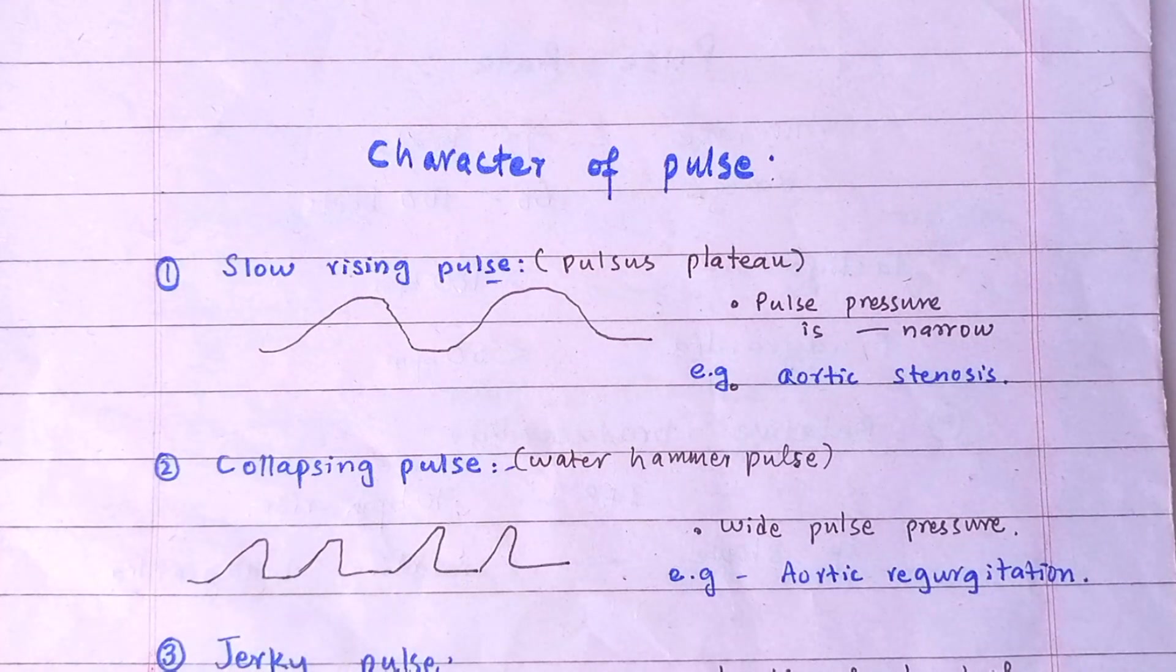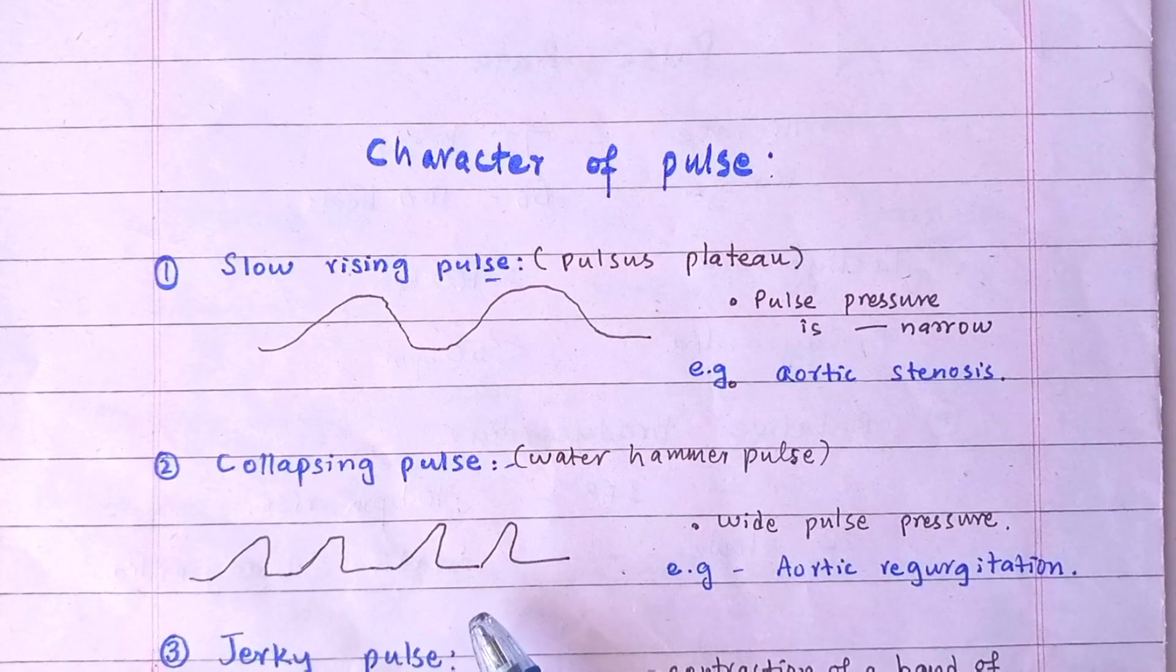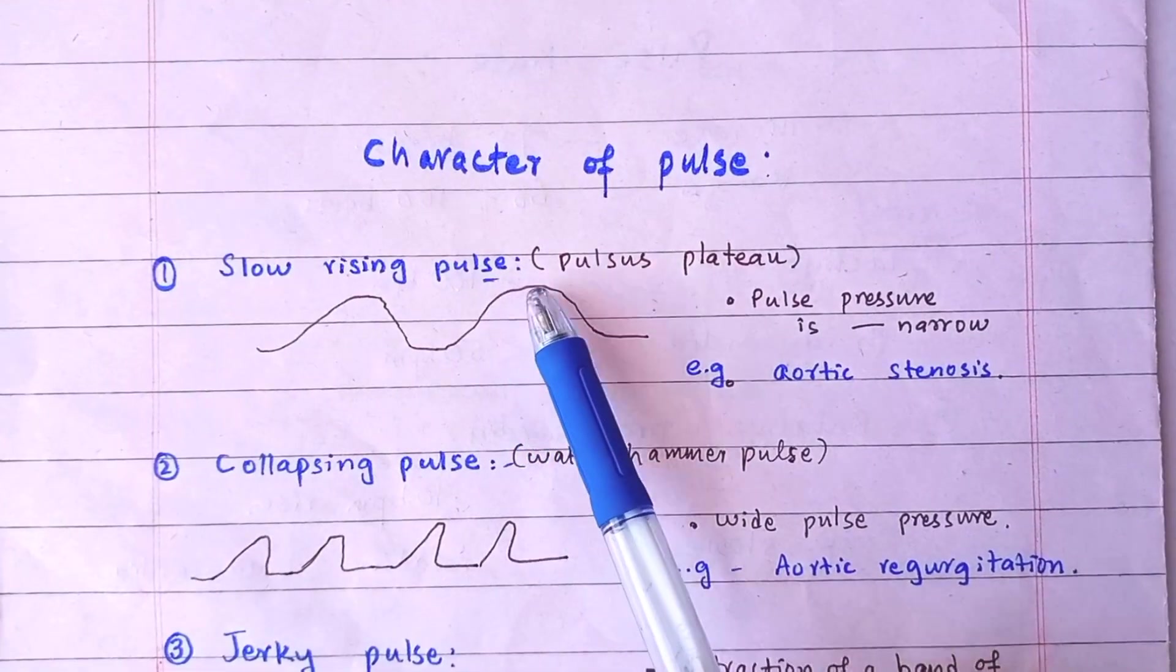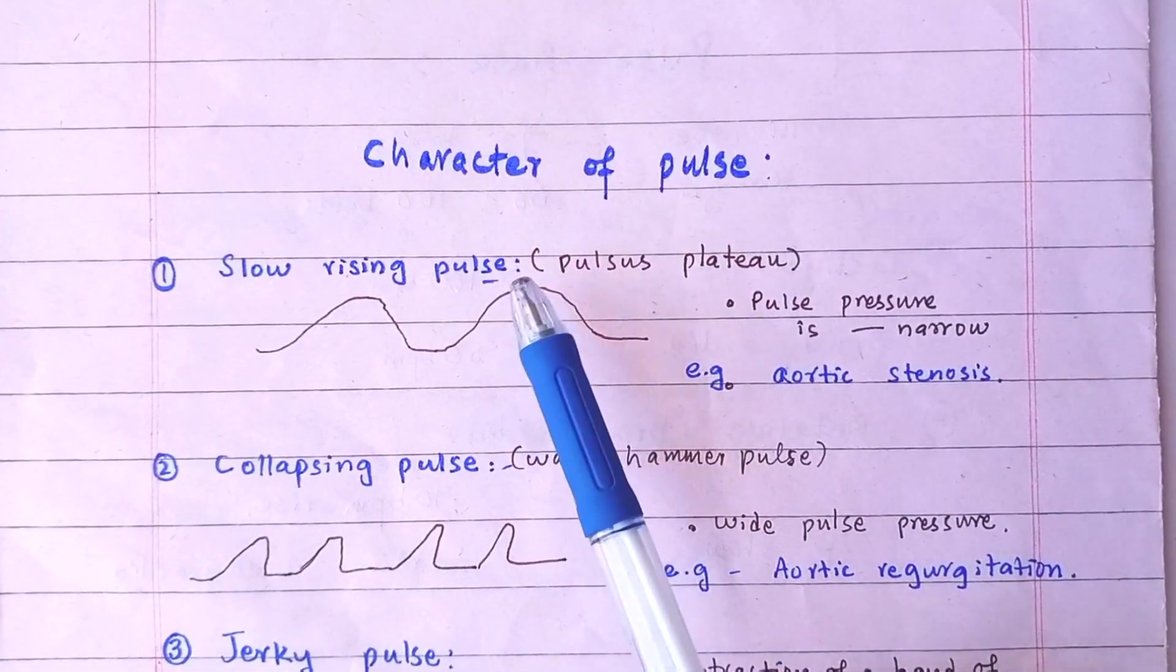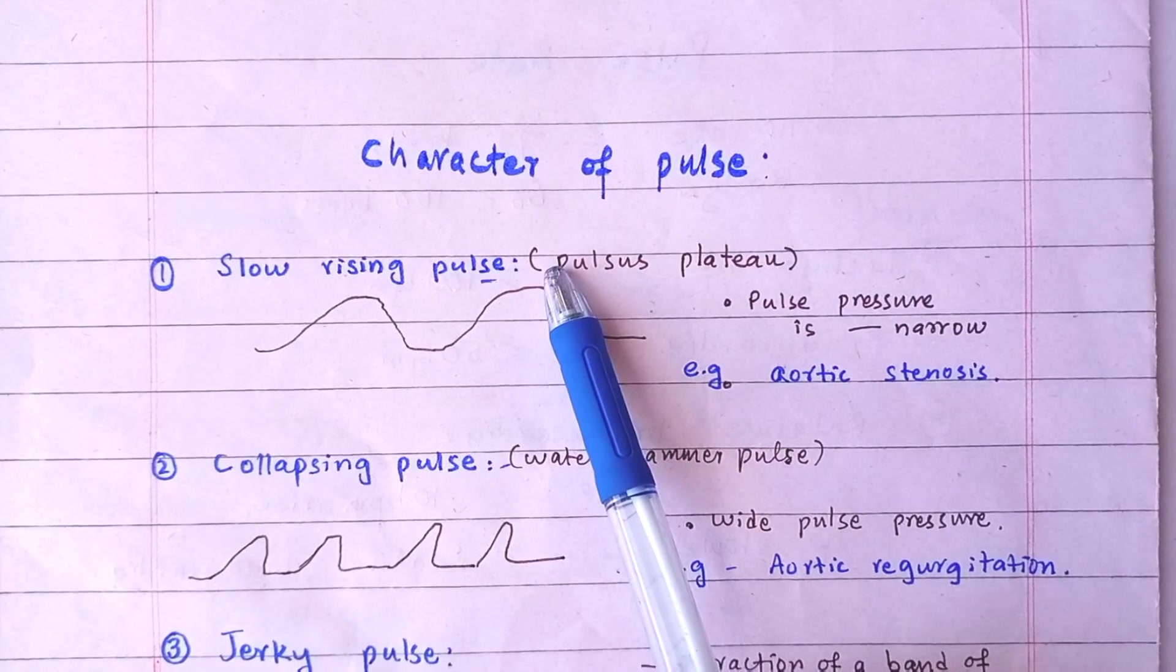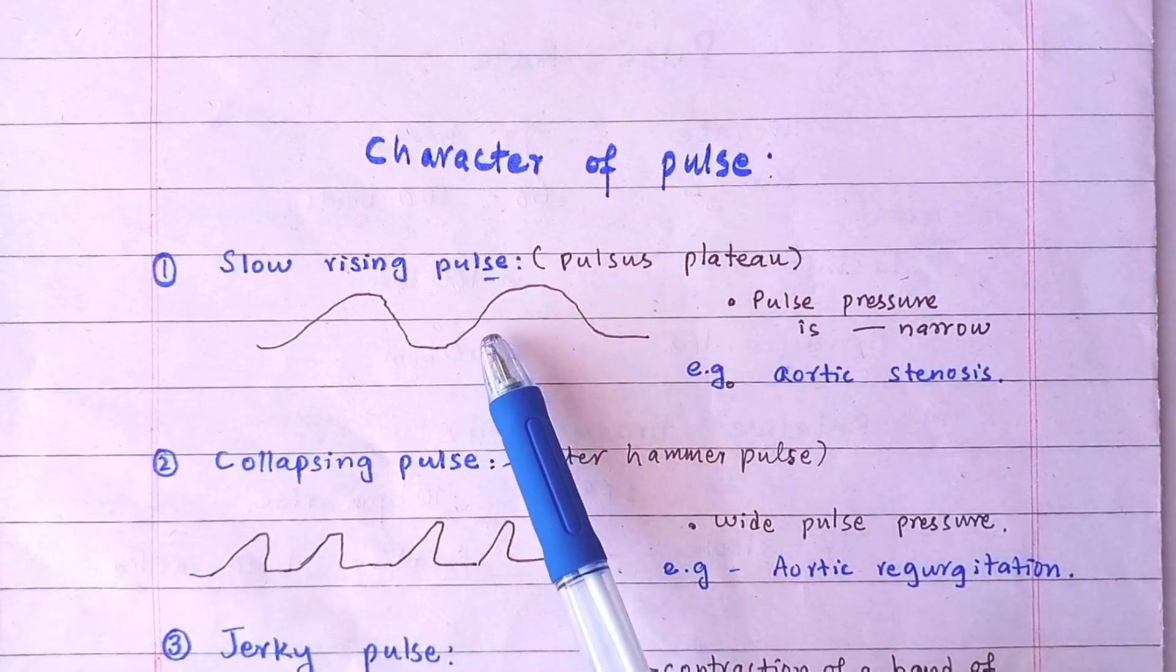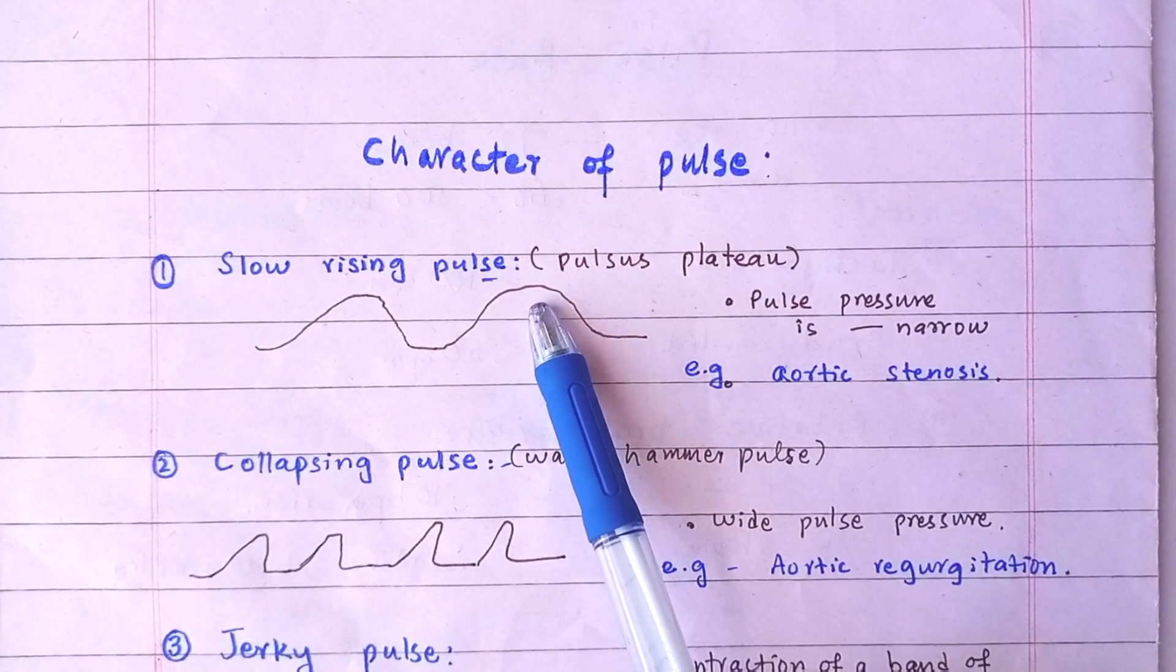Character of Pulse. In certain diseases the pulse wave has a specific waveform that is called character of pulse. A major pulse close to the heart, for example brachial, carotid, or femoral, should be palpated for this purpose.